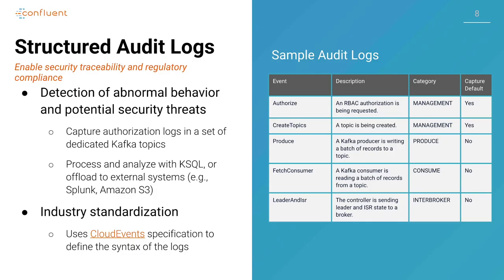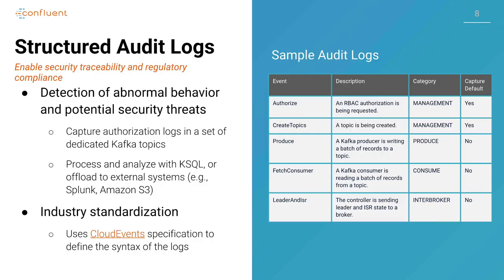There are samples of the kinds of audit logs you can create. If somebody is changing security or authorizing something through role-based access control, you want to log that. Is somebody creating a topic? That can be logged. Even lower-level things like is someone producing, or is a consumer group making a request for new messages from topics it's subscribed to — those can be involved in audit logging as well. The logs themselves are stored in Kafka topics, so that data is available for your analysis. You can run ksqlDB queries on it, or do any other computation over those event logs, including anomaly detection.